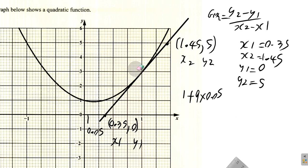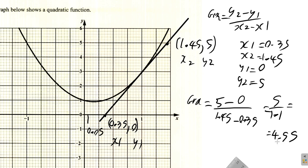The gradient now, we can calculate that as y2, which is 5 minus y1, which is 0. That would be the rise. Over x2, which is 1.45 minus x1, which is 0.35. So, using a calculator, 1.45 minus 0.35, it was 1.1. So, it's 5 over 1.1. 5 over 1.1 is 4.55. Equals 4.55. How about that?